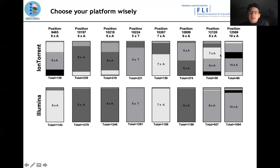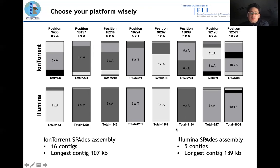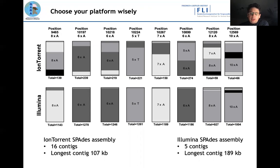This gives you an idea of how important it is to choose your platform wisely for the job. When you assemble Ion Torrent data using SPAdes, you get 16 contigs and the longest contig is 107 kb — limited by the homopolymer regions where the assembler cannot resolve the sequence. On the other hand, when you assemble Illumina data, you get 5 contigs and one large contig of 189,000 base pairs — which is almost the entire genome, with only the inverted terminal repeats typically missing.